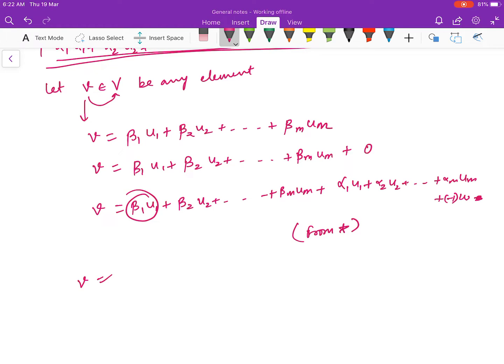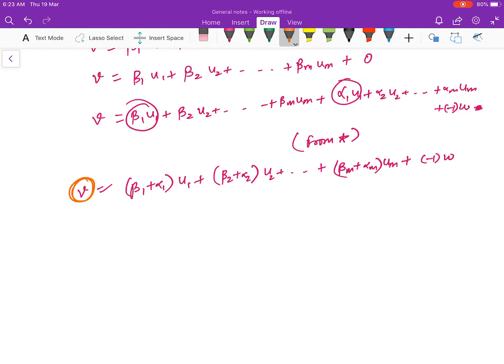You can write v by combining these terms: (β1 + α1)·u1 + (β2 + α2)·u2 + ... + (βm + αm)·um - 1·w. It means that for every v in V, you have these constants.